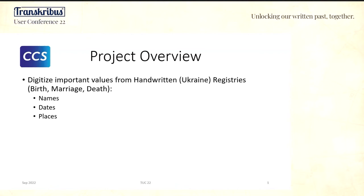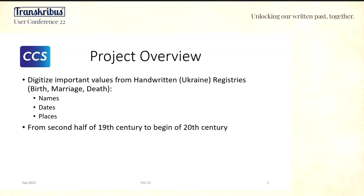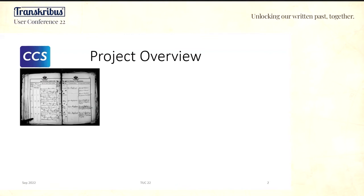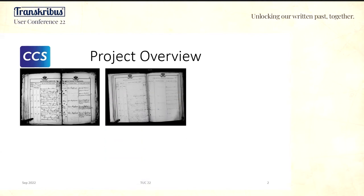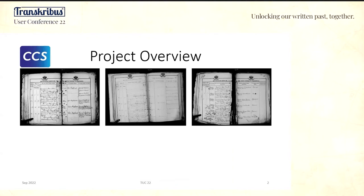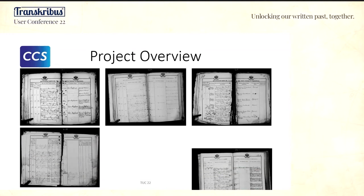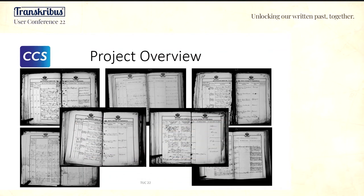The project itself is about digitizing handwritten birth, marriage, and death registries, where the job was to collect the main information like names, dates, and places. These records are from the second half of the 19th century until the beginning of the 20th century. It's form-based handwritten material with variants in layout, writing style, and scanning quality. You can see here a typical sample — tables filled in handwritten form — where scanning quality may be poor or there is overwriting, and some forms have more columns.